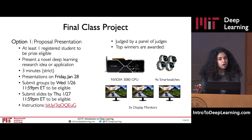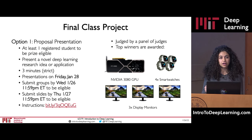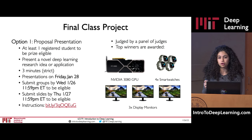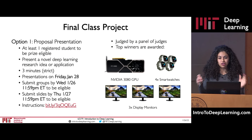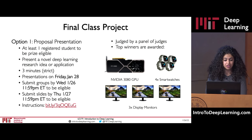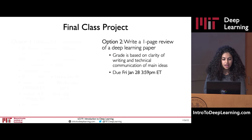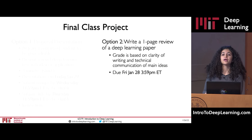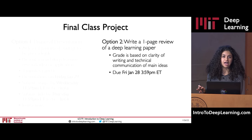A couple of notes on the final class projects. The critical action item for today is that if you're interested in the final project proposal competition, you must submit your group name by tonight at midnight. There are still spaces open. The second option for course credit is a written report of a deep learning paper, due by 3:59 PM Eastern time this Friday.